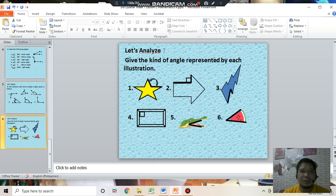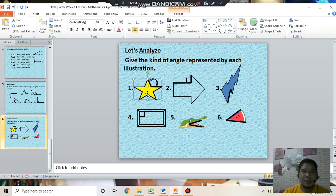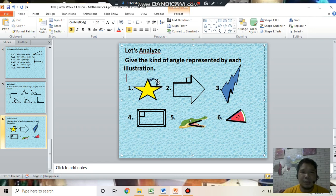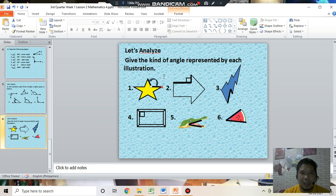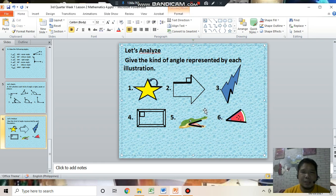Last activity in your module. Let's analyze. Give the kinds of angle represented by each illustration. Number 1 illustration is the star or the figure is the star. The measure is 180 degrees. This kind of angle is an obtuse angle. Number 2, 3, 4, 5, and 6. Please answer in your activity sheet or module.